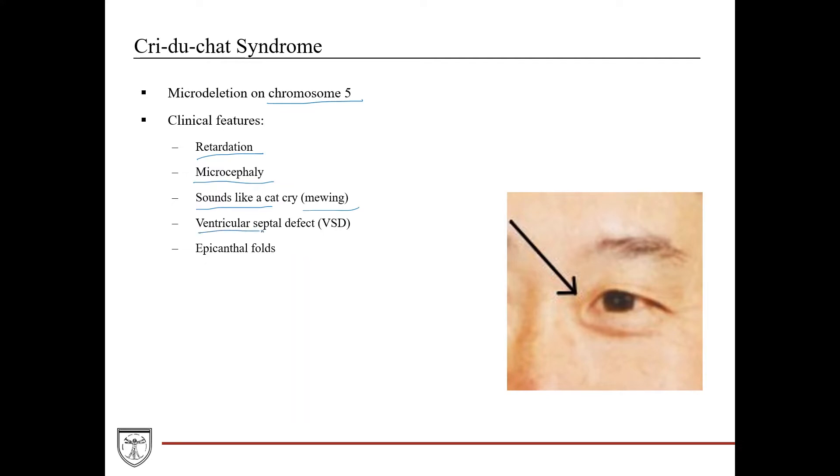They often have a ventricular septal defect, which if you remember from anatomy, is if you have your four chambers like this, and this would be your left atrium, left ventricle, right atrium, right ventricle, and that is a defect in this septal wall, so you can have blood shunting essentially from the right ventricle to the left, or from the left to the right, depending on the pressure gradient.